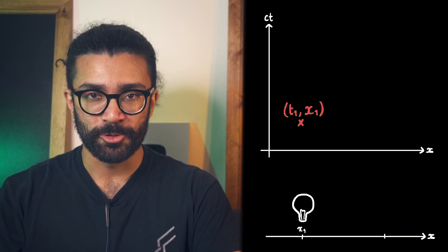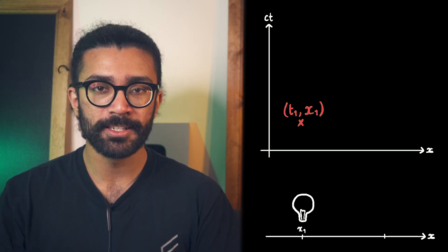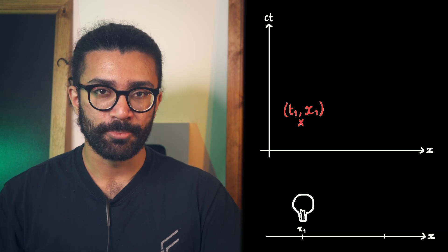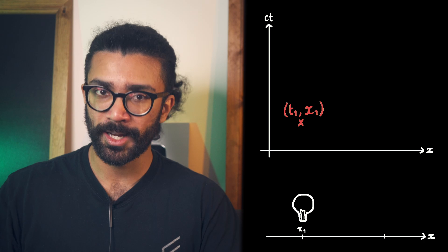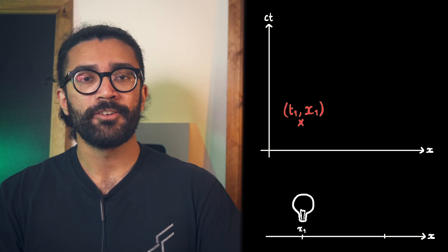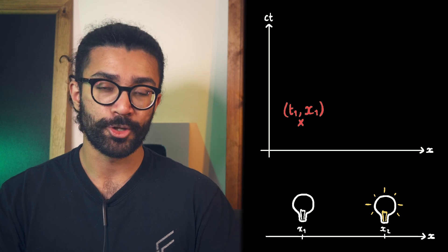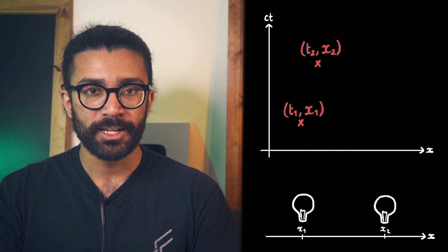Notice that we're not drawing full world lines here because we're only representing the event where the light bulb is switched on. We're not looking at the motion of the light bulb through space and time at this point, so we only care about a point rather than a world line. Let's say we have another light bulb being switched on at another point in space X2, at a time T2. We could represent it like this on our space-time diagram.